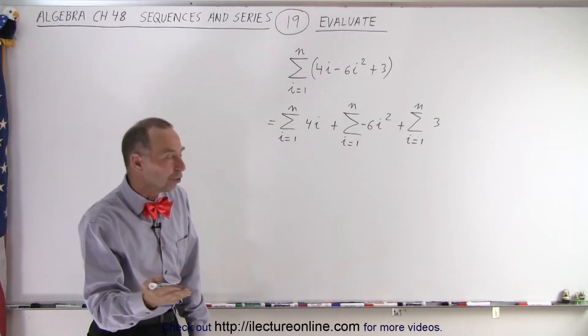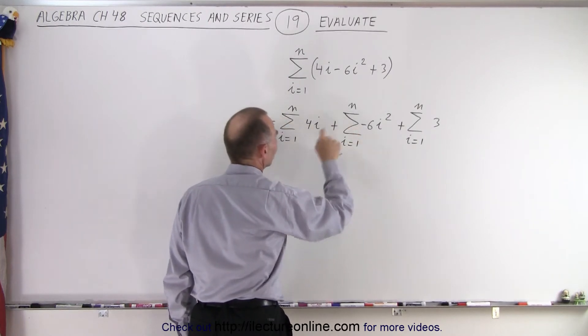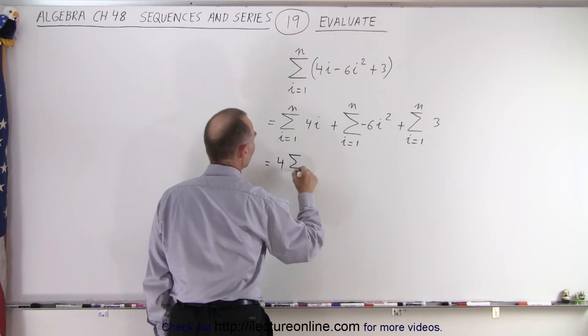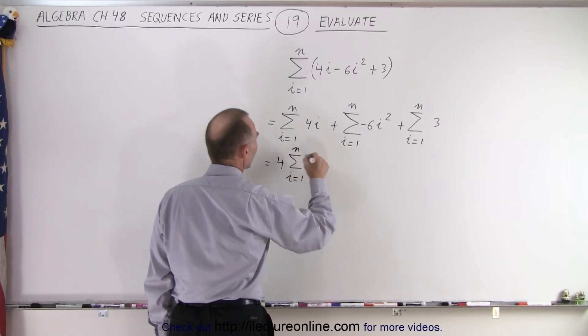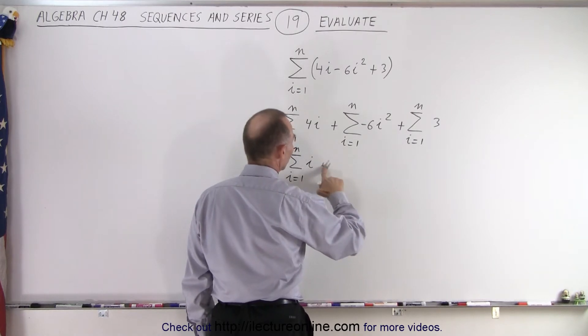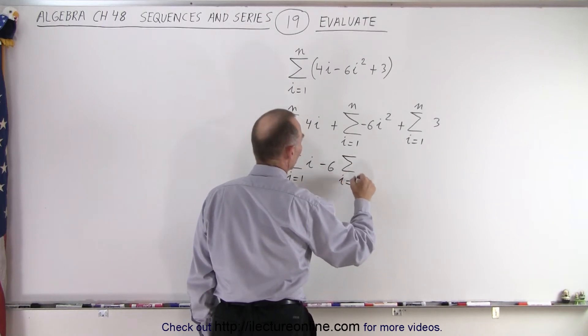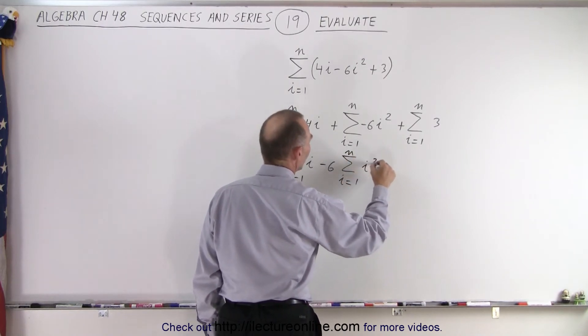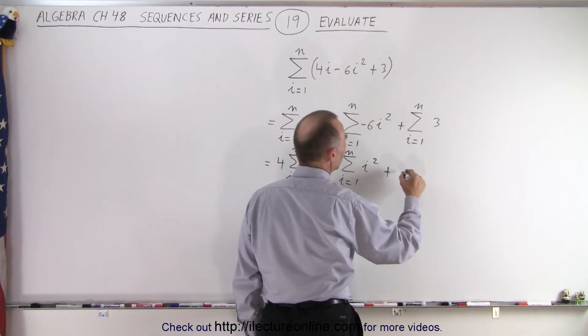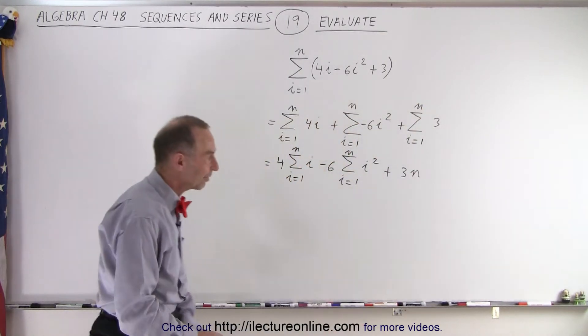Remember the rules: we can factor out the constant. We can put the 4 out here, the negative 6 out here. So this can be written as 4 times the summation from i equals 1 to n of i, minus 6 times the summation from i equals 1 to n of i squared, and then plus, remember the rule here, this will simply be equal to 3 times n.